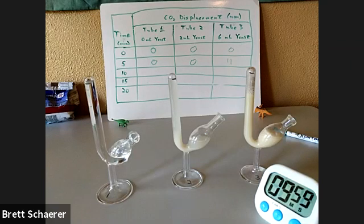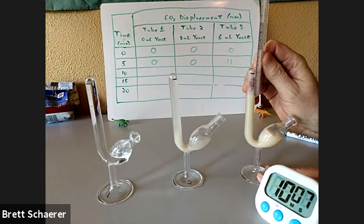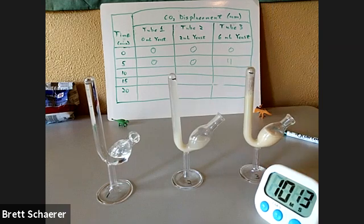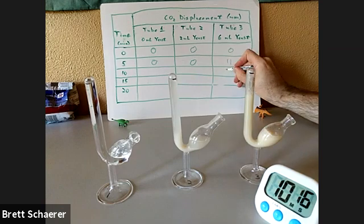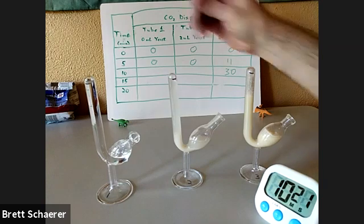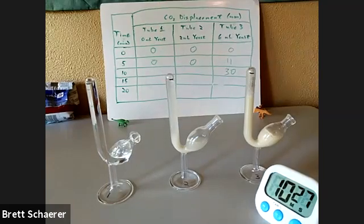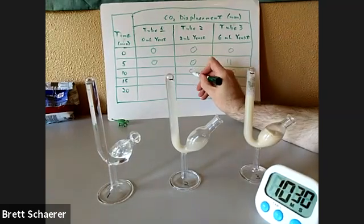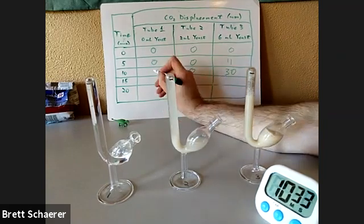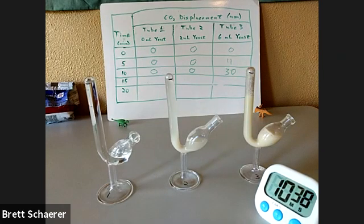It looks like it's time for another measurement. Tube three is 30 millimeters. Tube two is still at zero. And tube one is also still at zero. So we'll check back in another five minutes.